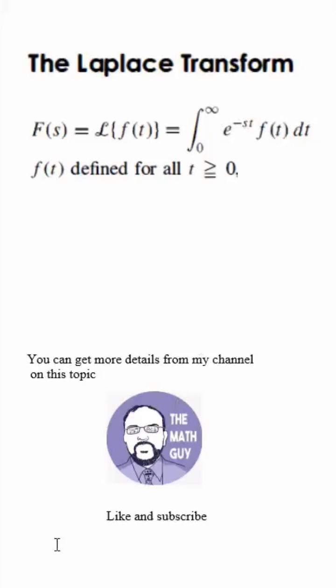So let's look at an example. Let's look at this function f of t equals 1. The Laplace transform is just 0 to infinity. And instead of f of t, you see 1 over here, e to the minus st dt, which is easily integrated.